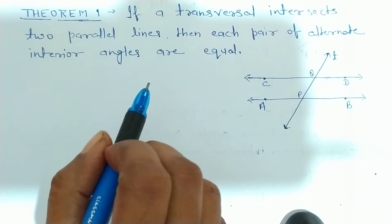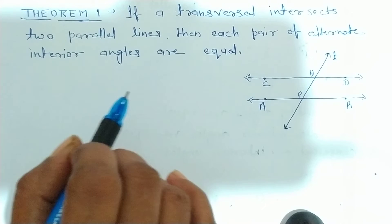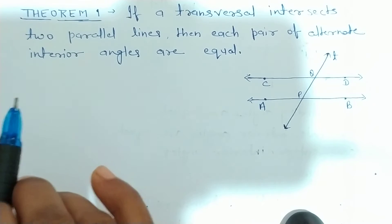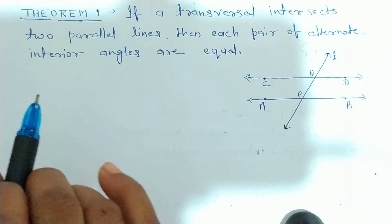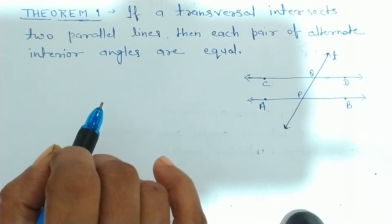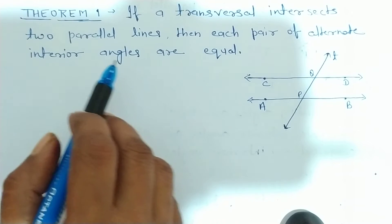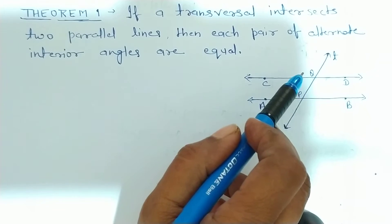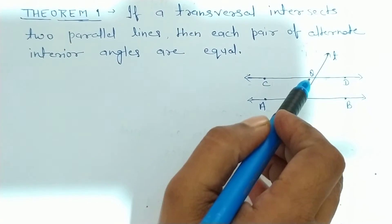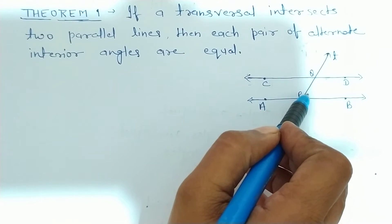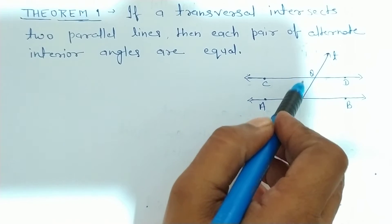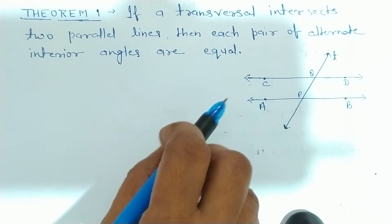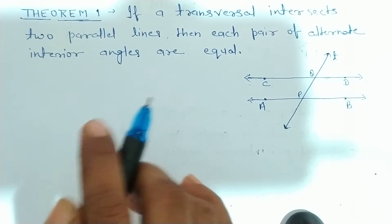Corresponding angles, alternate angles, alternate interior angles and consecutive interior angles. Hum ne ek corresponding angles axiom bhi dekha tha, jiske according, if a transversal intercepts two parallel lines, then each pair of corresponding angles, this angle and this angle, ya this angle and this angle, corresponding angles are equal.